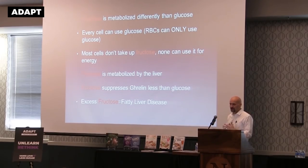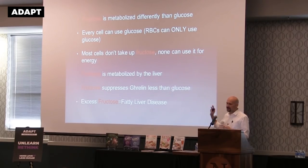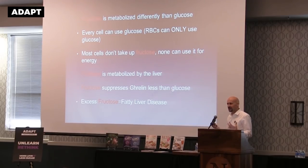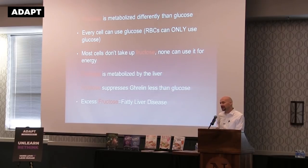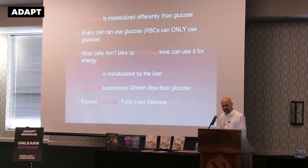Cells have to do something with fructose — it goes straight to the liver. Fatty liver disease is one of the primary pathologies we see as a result of insulin resistance and hyperinsulinemia. Fat gets deposited in the liver, which is unhealthy. You'll see elevated liver enzymes, and on imaging like an ultrasound or CT scan you'll see fat deposited in the liver. The same thing happens in the pancreas.